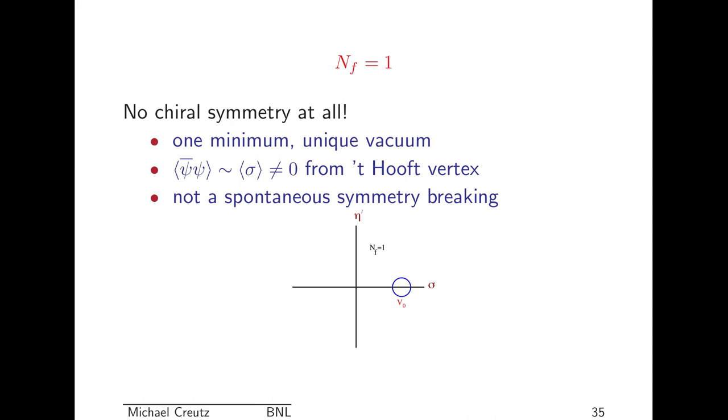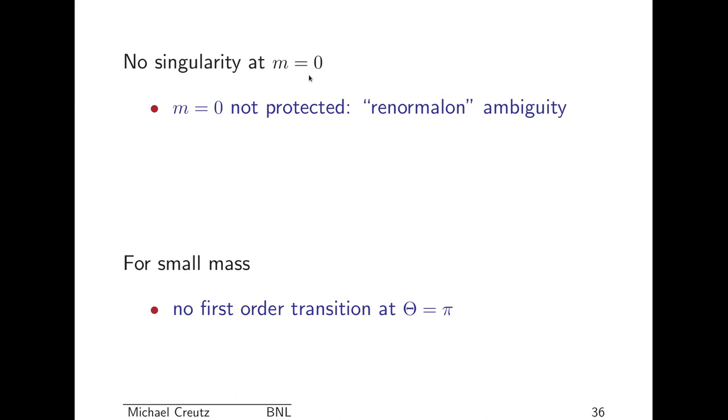So we talked about odd numbers. Well, a nice odd number is one. And this is one of my favorite theories, because you go down to one flavor, there's no chiral symmetry at all. There's only one minimum. In this minimum, psi bar psi does get an expectation value, but it's not from spontaneous symmetry breaking. It's from something which is called the 't Hooft vertex. So one flavor of QCD has a mass. And if I make the mass be a little bit negative, I don't have any first-order phase transition at theta of pi until I get to fairly large values. One flavor of QCD does not have any singularity at m equals zero. And so there is no symmetry protection of a massless quark. This is sometimes called a renormalon ambiguity. For small mass, there is no first-order transition at theta of pi.